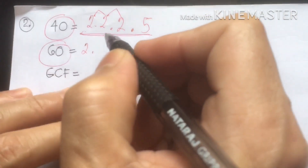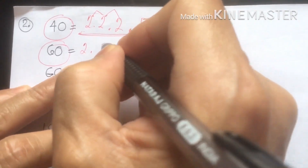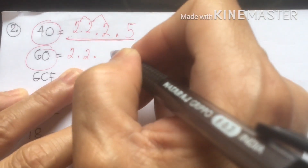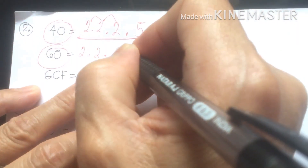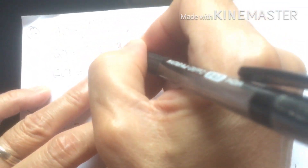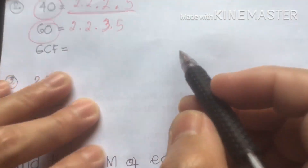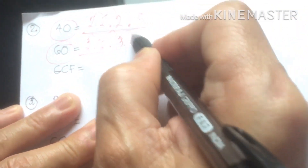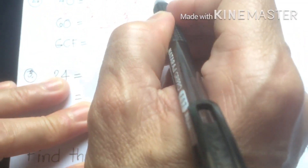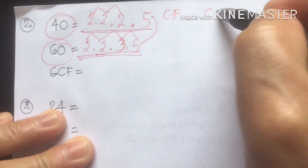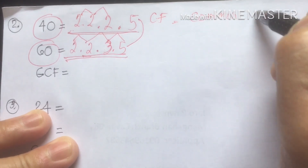For 60: 2 × 2 × 3 × 5 — two times two is four, times three is twelve, times five gives us 60. Now let's proceed to find the GCF, or common factor. The CF is what we call the common factor between 40 and 60.